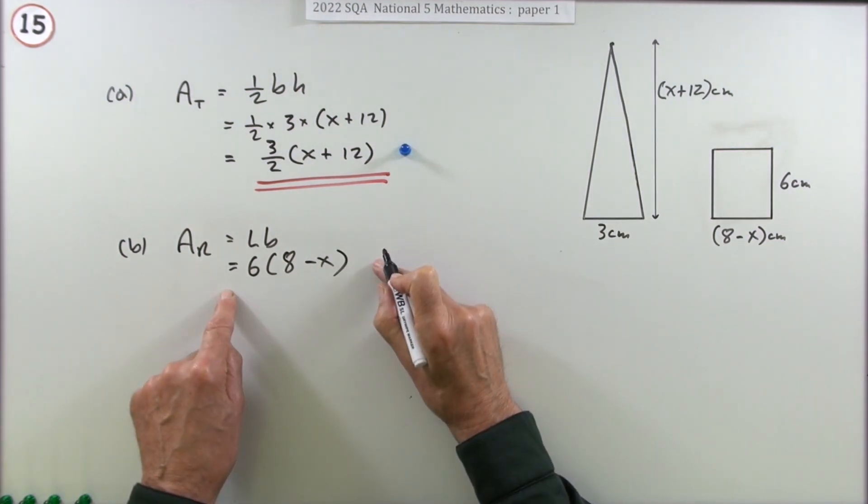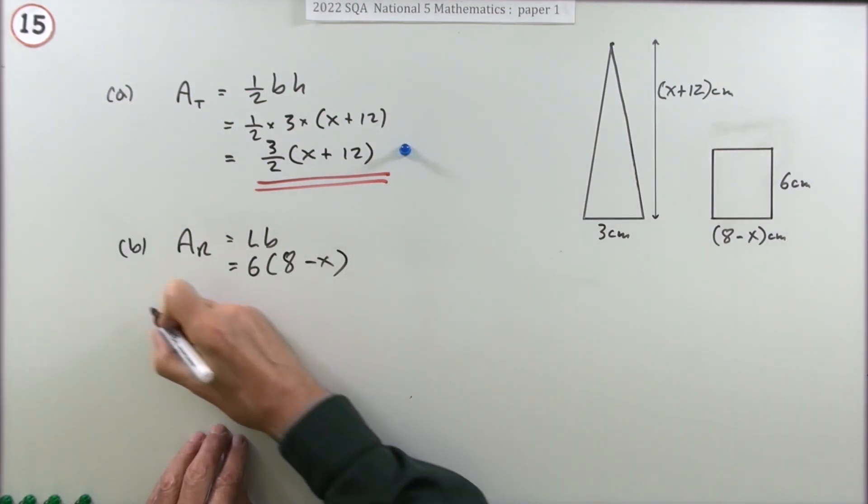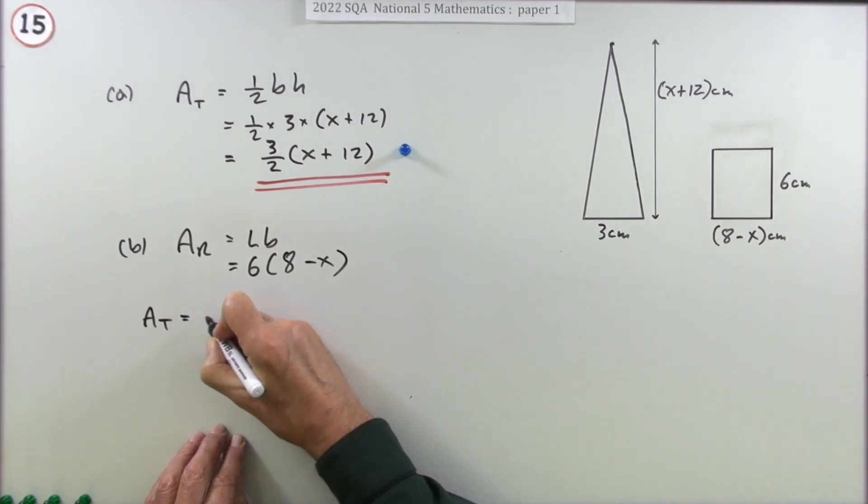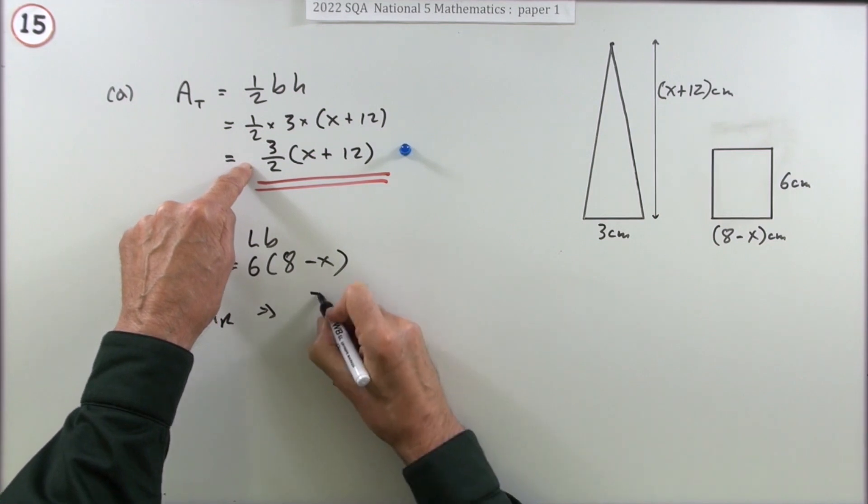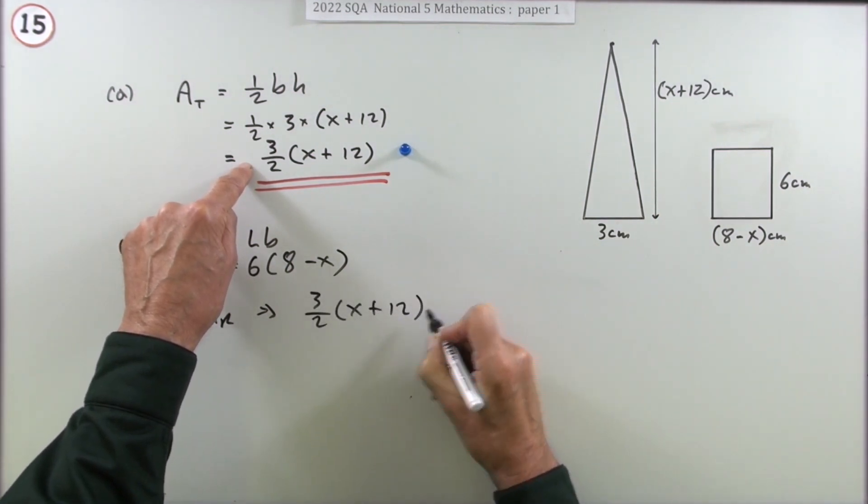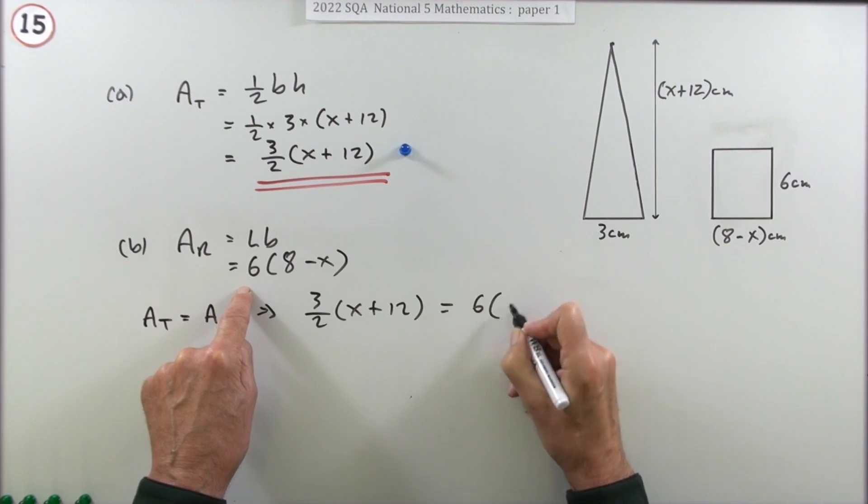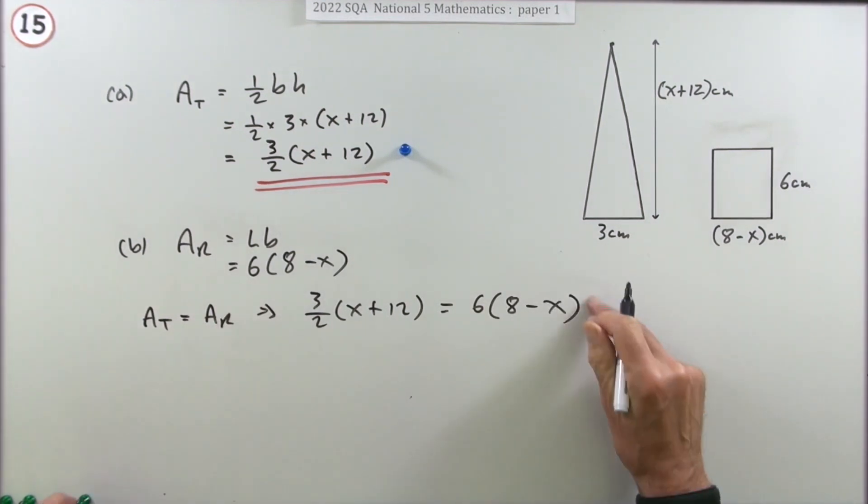Now that doesn't get a mark yet. You'll get the mark once you've equated them. So it said you want the area of the triangle to be the same as the area of the rectangle. That means you want this 3 upon 2 times (x + 12) to be the same as that 6 times (8 - x). Now you get the first of the marks.